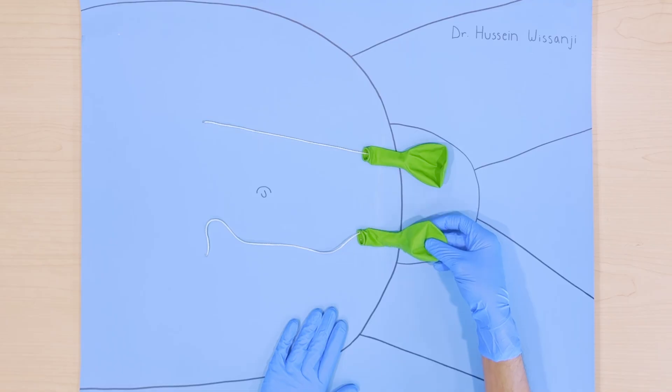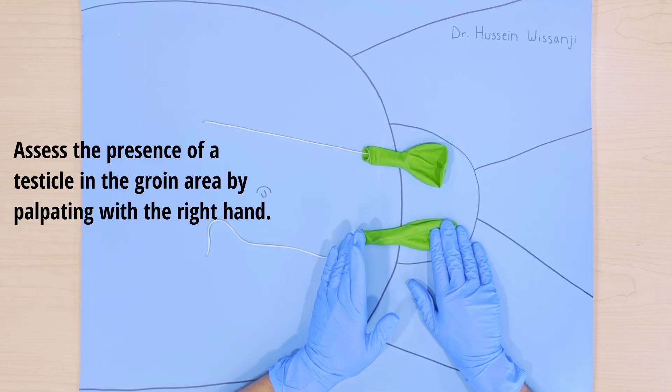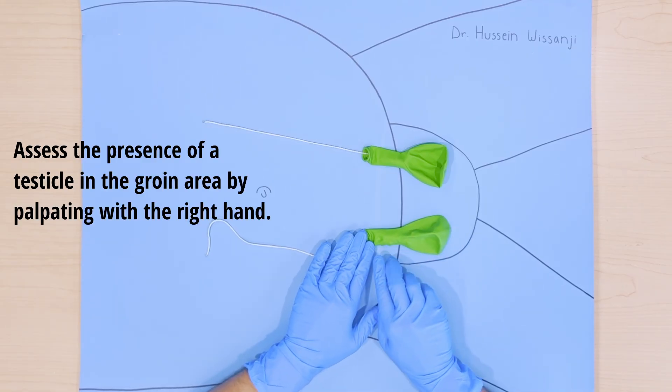The first step to palpating a testicle that is located in the inguinal region is to take your right hand and use your fingers to gently palpate the inguinal region. You'll be looking to palpate the testicle in that region.